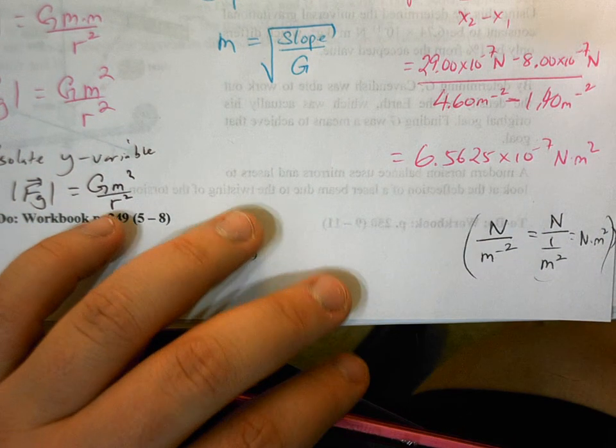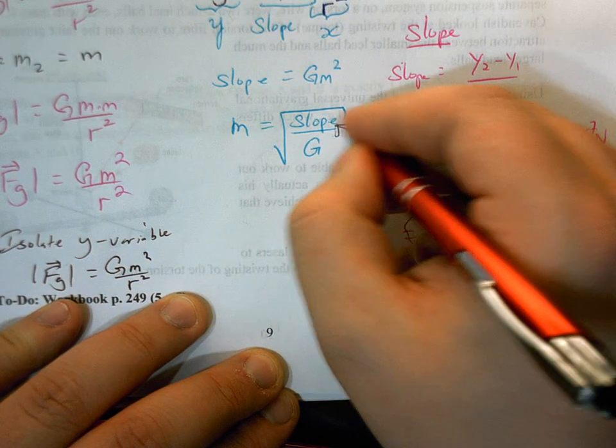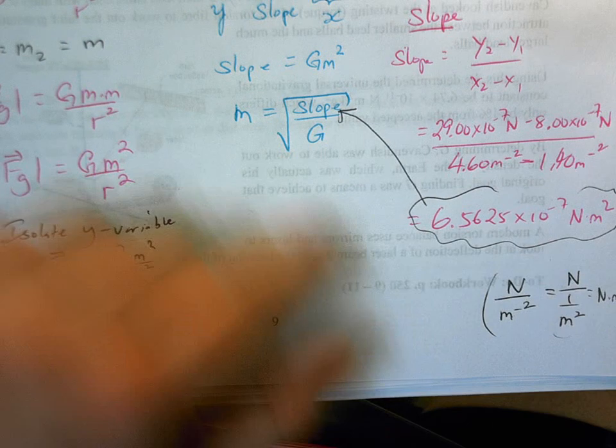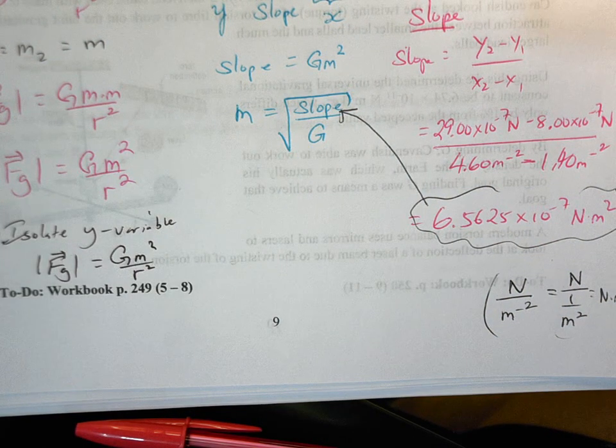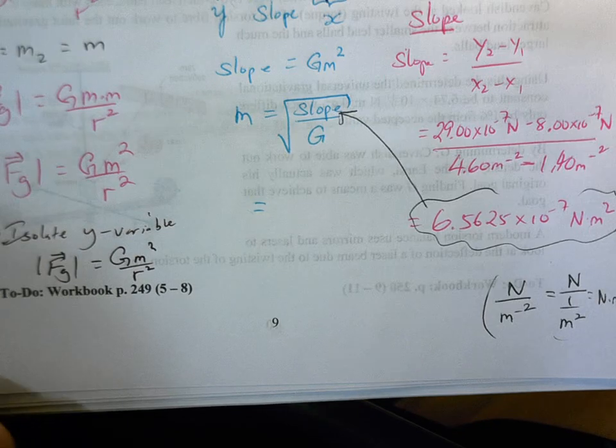Now that we have the slope, we can take that value, and we can put it into our equation here for the mass. We're going to take that slope, we're going to divide it by the universal gravitational constant, and then we are going to square root that whole thing to get our final answer.